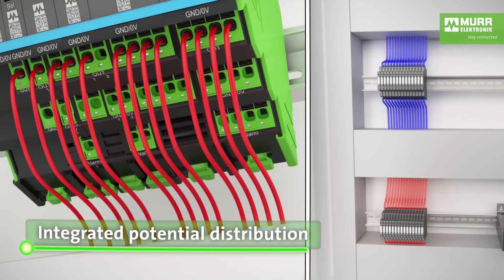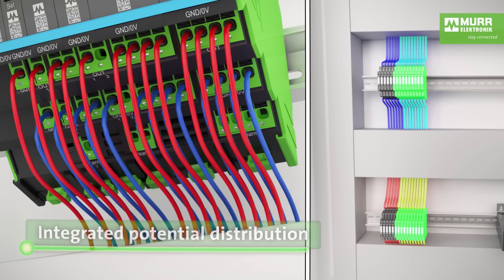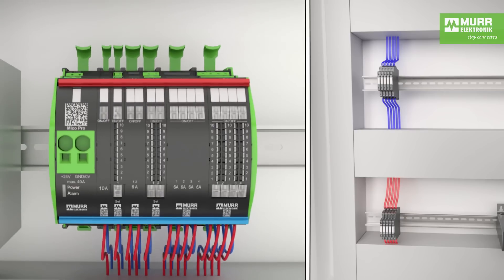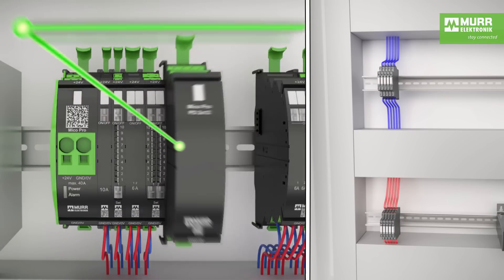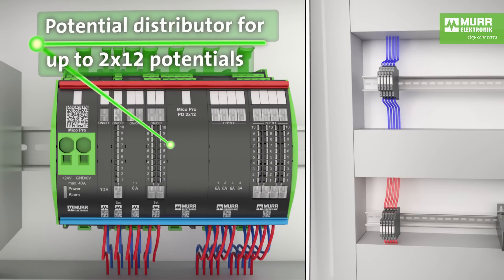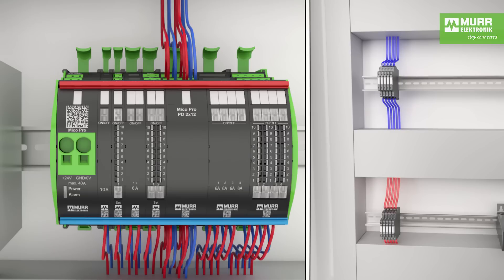Each channel has a zero volt terminal in addition to the plus terminal, removing the need for a separate zero volt terminal level in the switch cabinet. A potential distribution module allows easy termination of potential groups — for example, sensors and actuators remain grouped near the protected channel. This allows a channel to be duplicated as often as desired, providing further space savings.